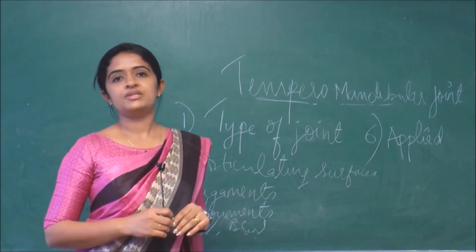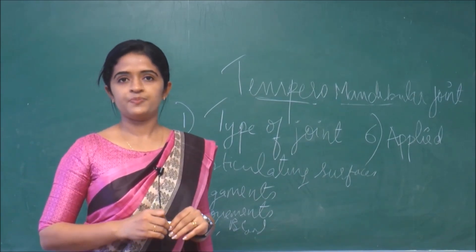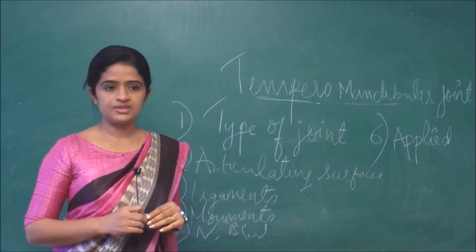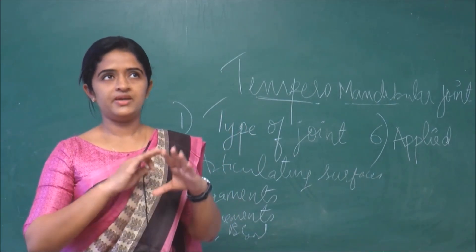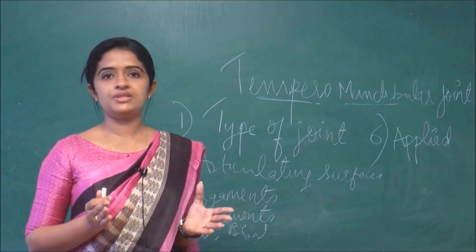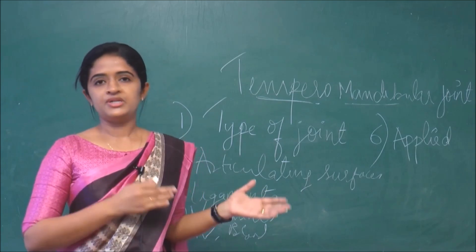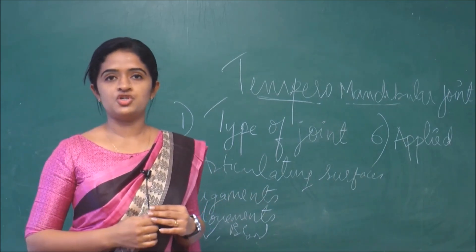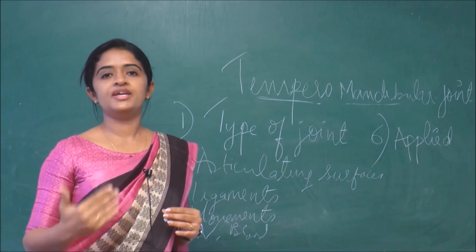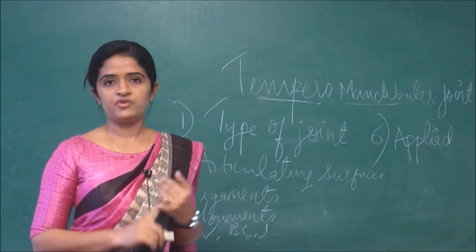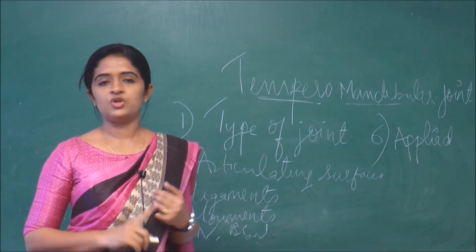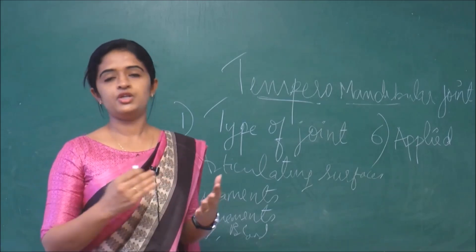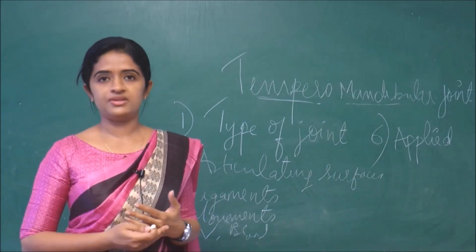Normally in a structured essay for university exams, they will narrate a history — for example, a person presenting with difficulty at the temporomandibular joint — and then ask questions like: what type of joint is it, what are the movements occurring, and which muscles are involved.